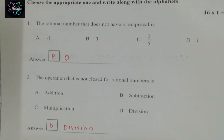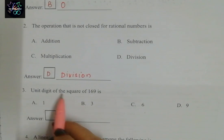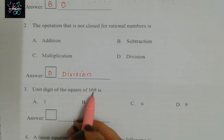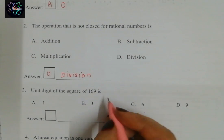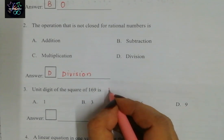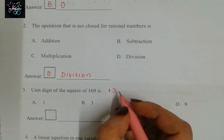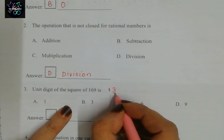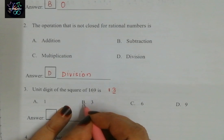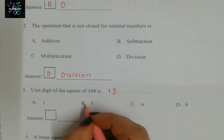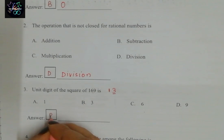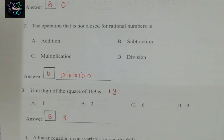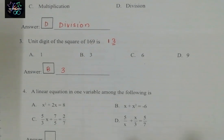Next question: the unit digit of the square of 169. We know the square root of 169 is 13, so the square of 169 gives a unit digit of 3. The correct answer is B: 3.